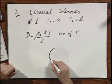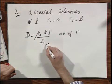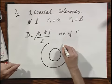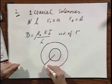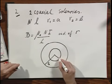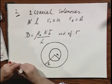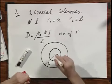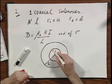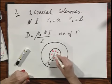And so this screams for a superposition solution. If I look from above, so this is the solenoid with radius B, and this is the solenoid with radius A.